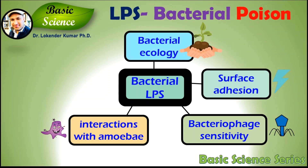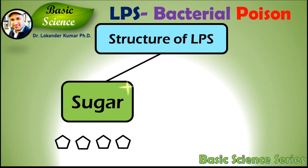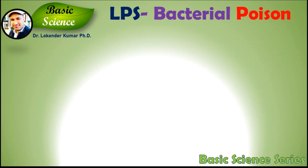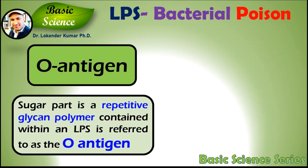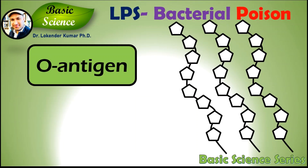Now let's discuss the structure of LPS. LPS is composed of two major parts: one is sugar and another is lipid. The sugar part is a repetitive glycan polymer contained within LPS, referred to as the O antigen, O polysaccharide, or O side chain of the bacteria.